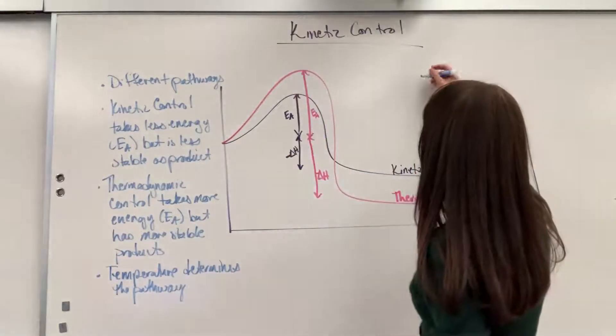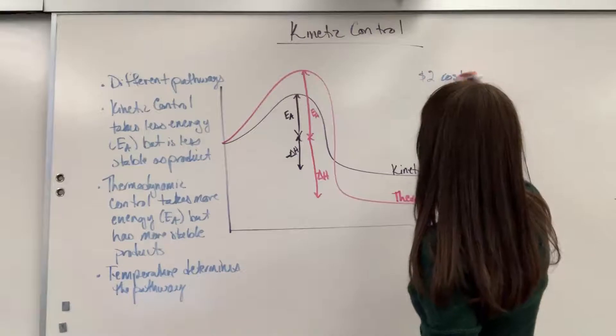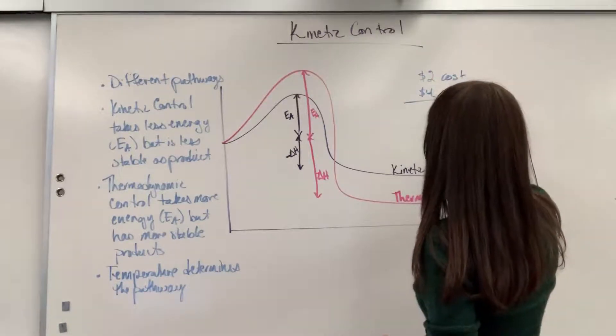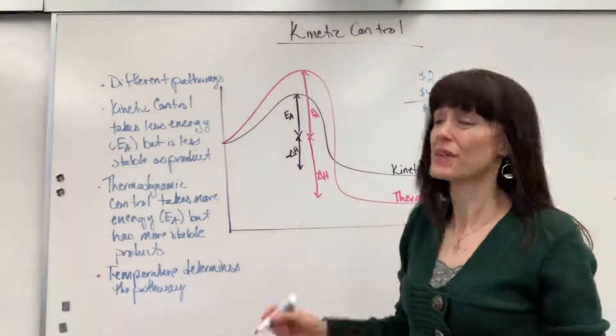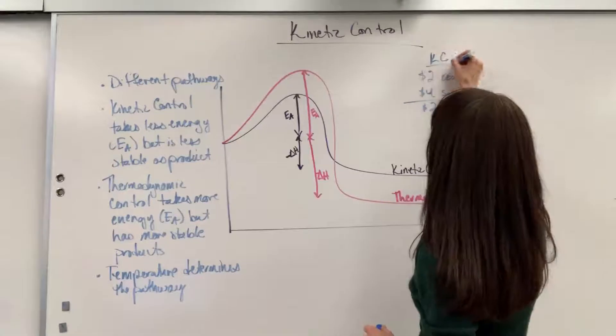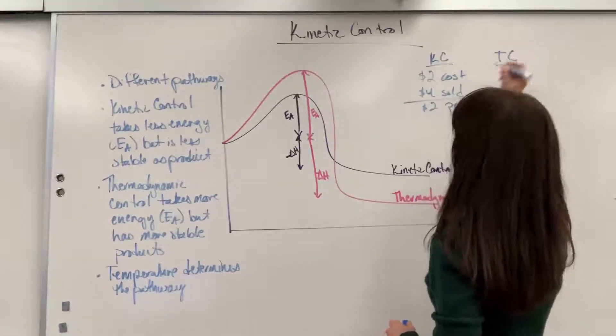So let's say $2 cost, $4 sold, my profit is going to be $2. All right, so that's for the kinetic control. Now let's do for the thermodynamic control.